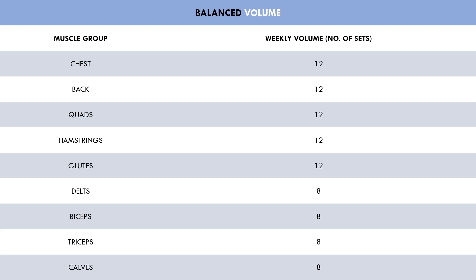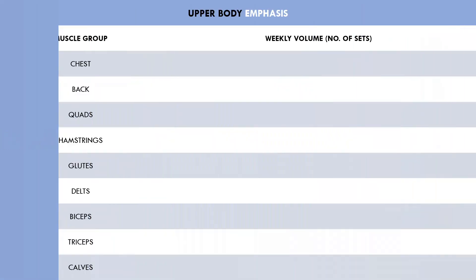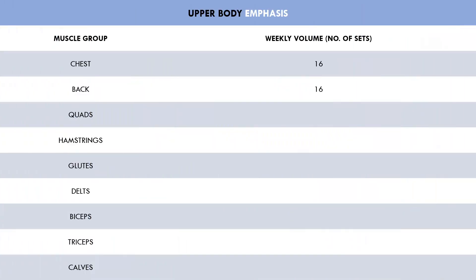Let's take this same trainee and reallocate their volume to emphasize the upper body. The overall training volume may not be much different, but the distribution will be. We have allocated 16 sets to the chest and back, eight sets for the quads, hamstrings and glutes, 12 direct sets for the delts, biceps and triceps, and four sets for the calves. So quite clearly, we've allocated more volume for the chest, back, delts, biceps and triceps, and less volume for the quads, hamstrings, glutes and calves.